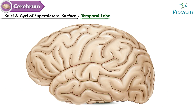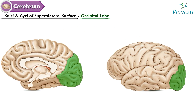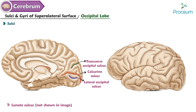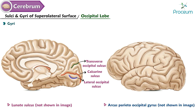The sulci and gyri of the occipital lobe include sulci: transverse occipital sulcus, lateral occipital sulcus, lunate sulcus, and calcarine sulcus. The gyri include: arcus parieto-occipital gyrus, superior occipital gyrus, and inferior occipital gyrus.